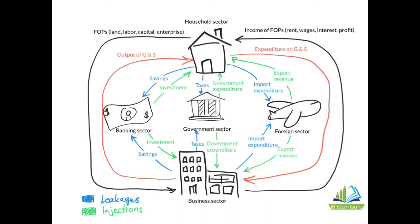So let's see what the circular flow of income model looks like. At first it seems really complex, so I'm going to talk about the key features of this model. You have five sectors represented: the household sector, the business or firms sector, the government sector, the banking or financial sector, and the foreign sector which includes foreign firms and households.